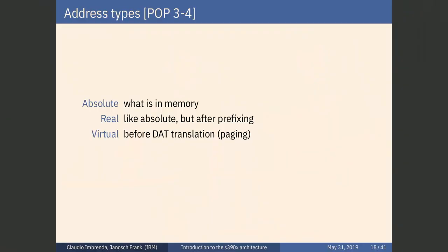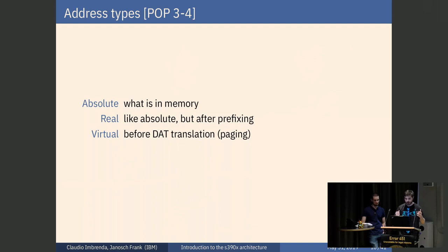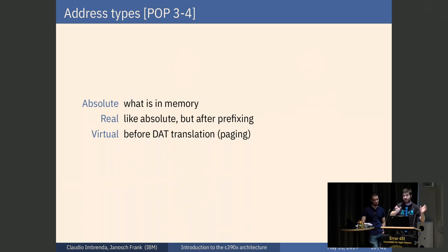There are three different address types. Absolute is what's really in physical memory and is seldom used directly. Real is like absolute but before prefixing — not after. Virtual is before translation: first you have a virtual address, you translate it to a real address, then to an absolute address, which goes into memory.